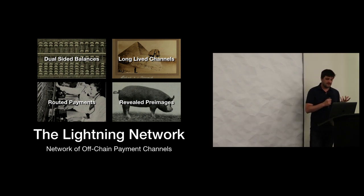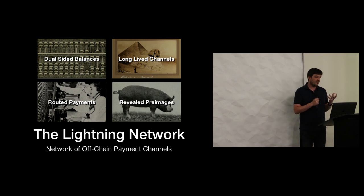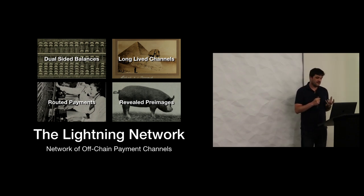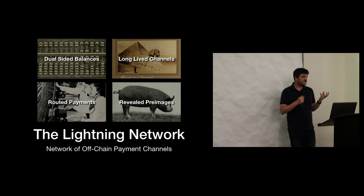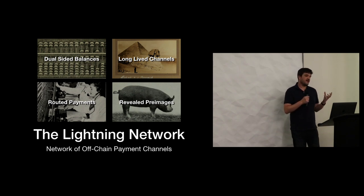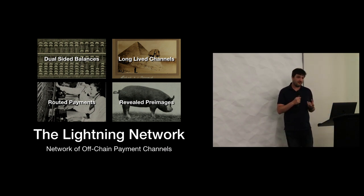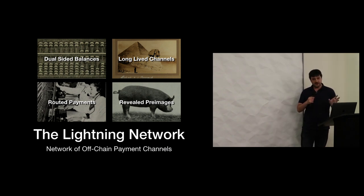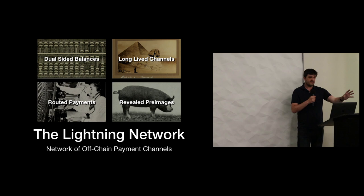That timeout is super important to the Lightning Network — that's how Lightning achieves routing. An important property to understand is dual-sided balances. When you open a channel, by default when you create it, the money is on your side, so you can pay out to your peer. But until there's a balance on the other side, money won't be able to flow back in your direction.